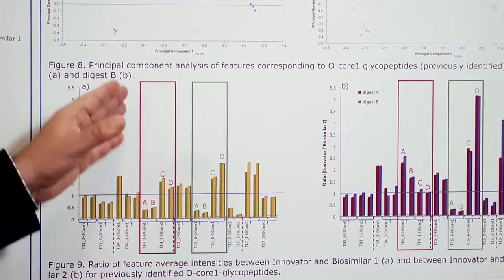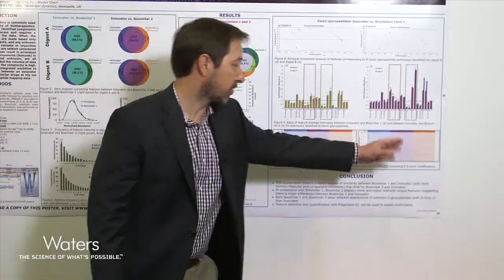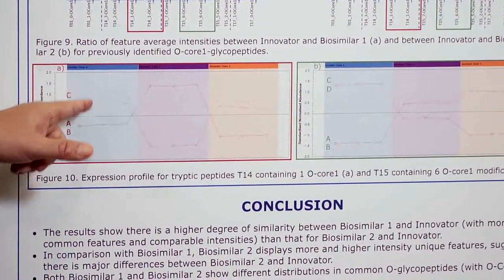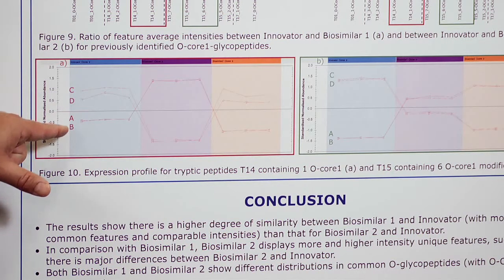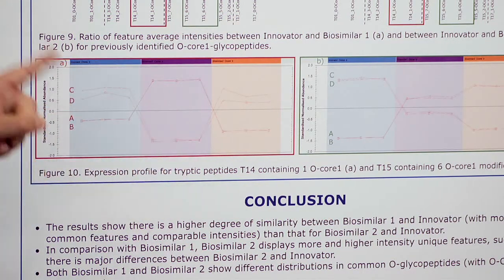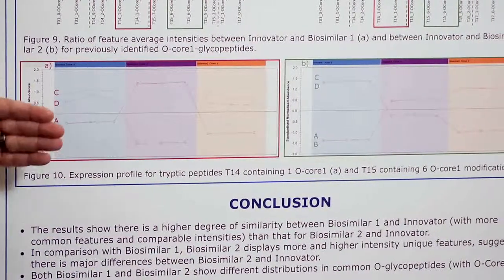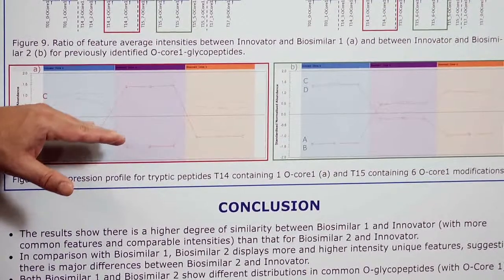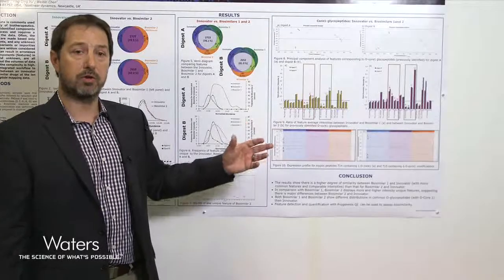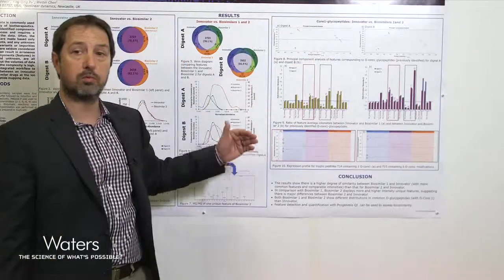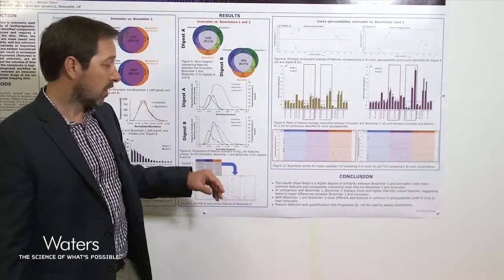Here we can use the visualization: the red rectangle on the left and the green rectangle on the right each show one, two, three replicates for the innovator, biosimilar one, and biosimilar two with normalized intensity. For features A and B, which represent the T14 peptide with one core glycan, you can see they have exactly the same profile across the three innovator replicates — which is what you want — and they are also very different between the innovator and biosimilar one. Progenesis QI is very good for visualization as it calculates PCA, and you can extract this type of information very quickly as a double check.